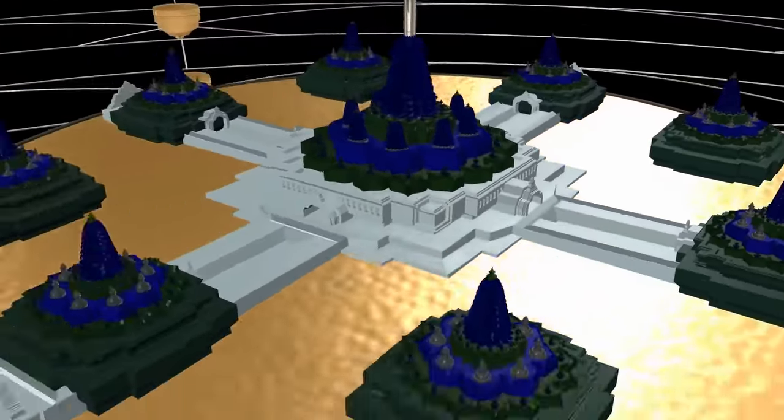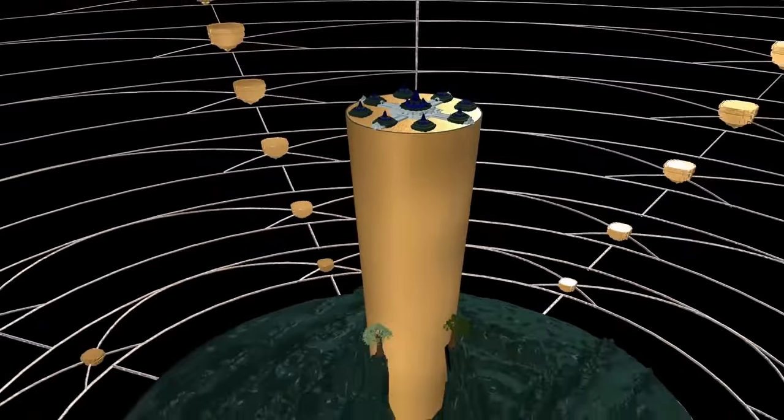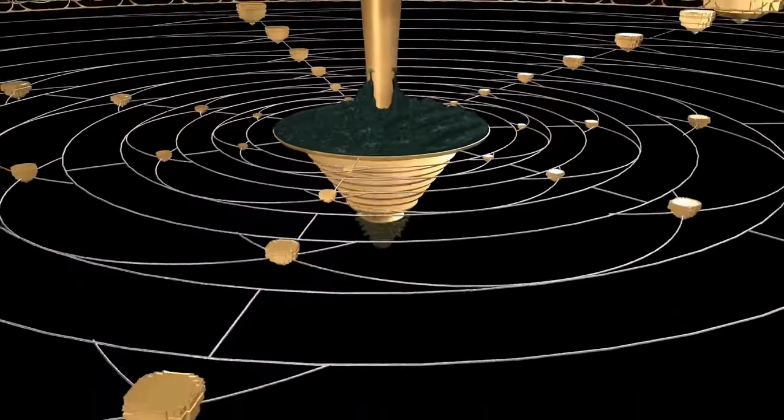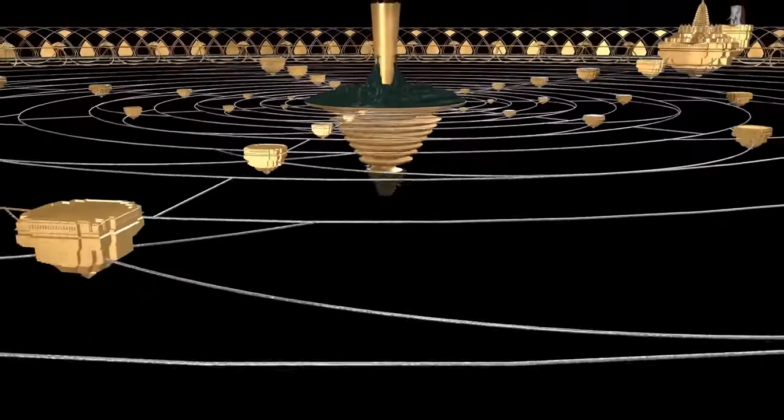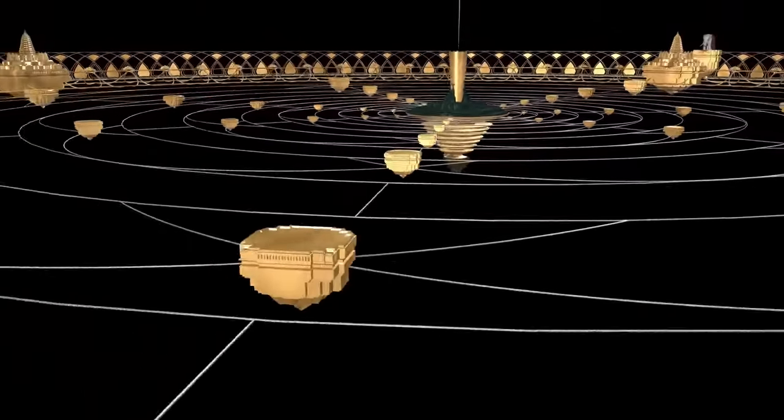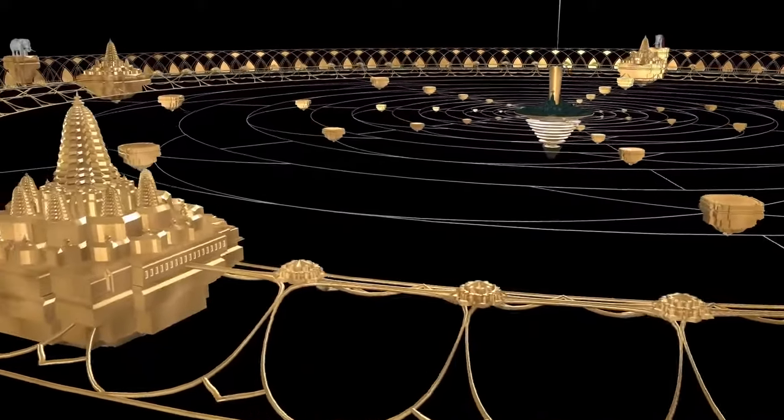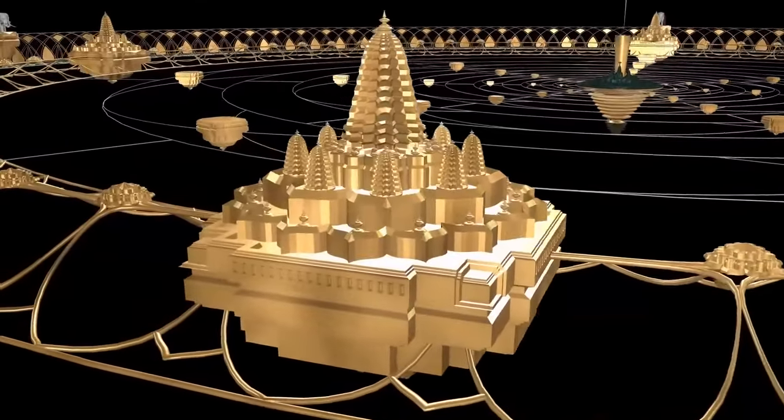Moving out, we can see the broader Bhumandala, seven concentric islands and oceans surrounding them. The seventh of these islands is Pushkara Dweep. On that island is Mount Meru, on the mountain there are various cities of demigods such as Indra.